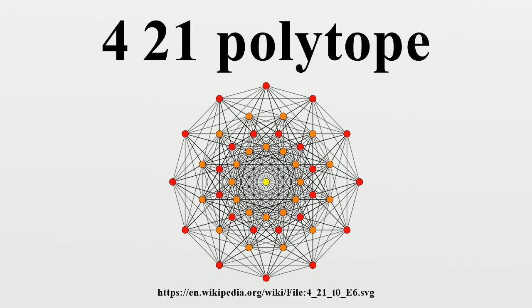Its Coxeter symbol is 421, describing its bifurcating Coxeter-Dynkin diagram with a single ring on the end of the four-node sequence. The rectified 421 is constructed by points at the mid-edges of the 421.